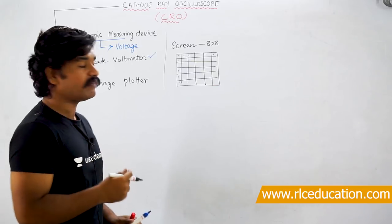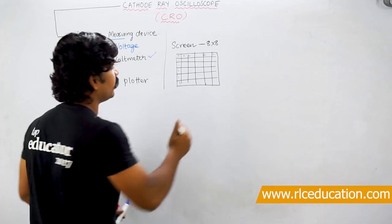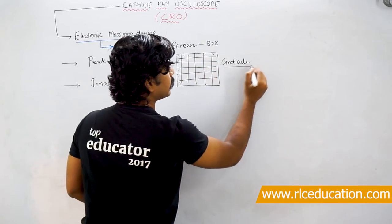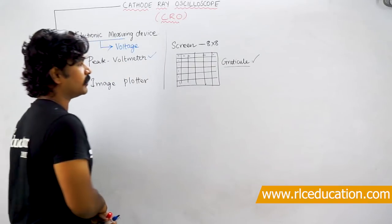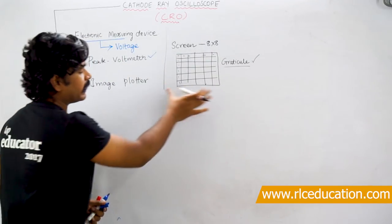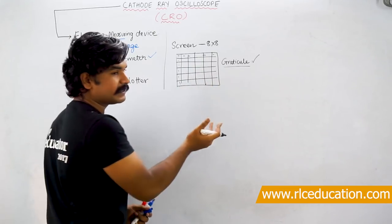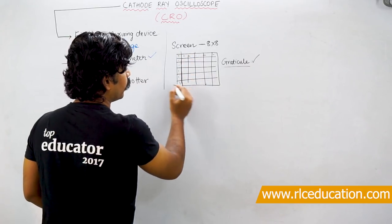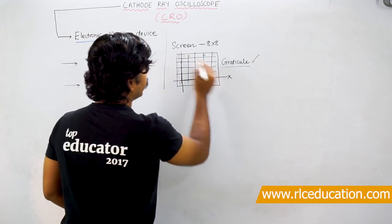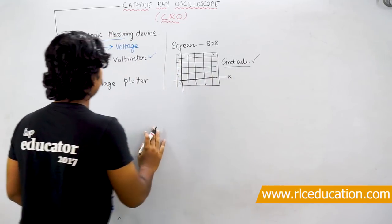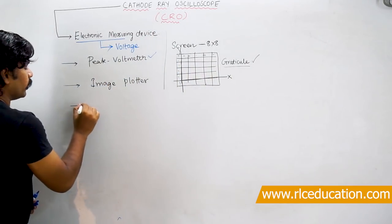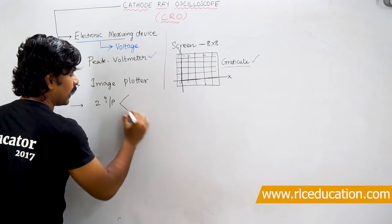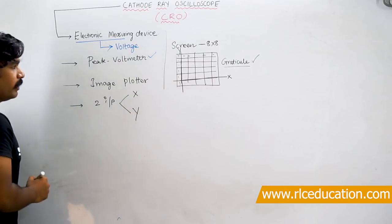The graph on the screen is created by something called a graticule - these lines which form the graph on the screen are called graticule. Since a graph is an X-Y coordinate system, the CRO has two coordinates: a Y coordinate and an X coordinate. Because it has two coordinates, a CRO can accept two inputs - one called the X input and the other called the Y input.